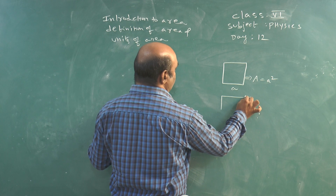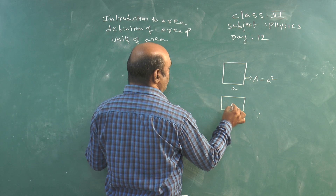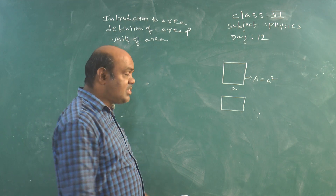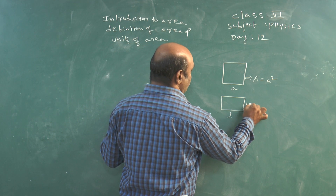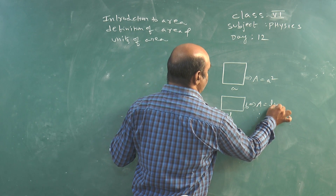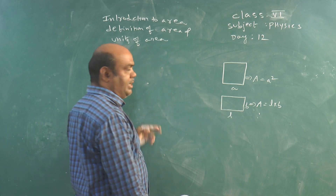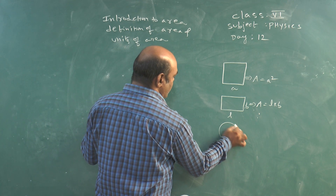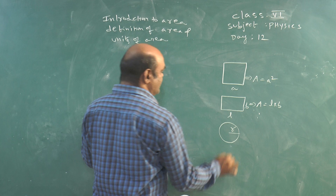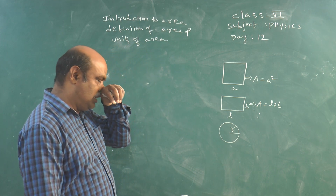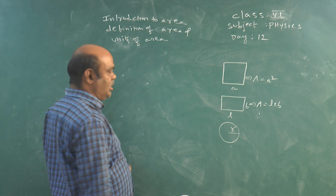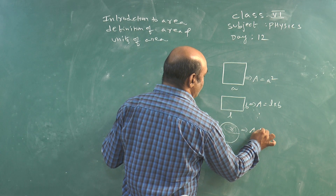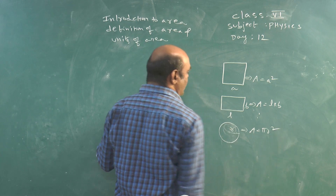Otherwise, if you consider a rectangular box, it is also occupying some surface. Here length is L, breadth is B, then area equals L into B. If you consider a circle of radius R, the circle also occupies some surface, and the area formula is pi R square.